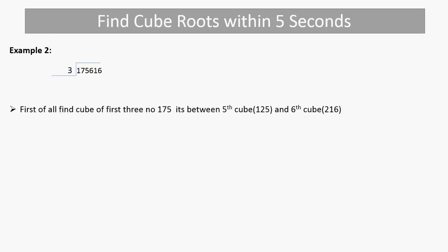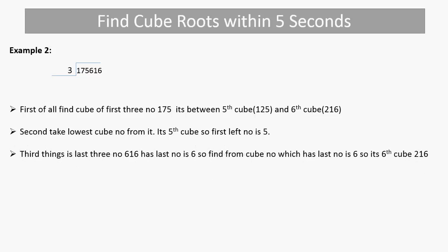Let's see another example: at 175616, find the cube root. First of all find the first 3 numbers: 175. Find which cube numbers it falls between — 5 cubed is 125 and 6 cubed is 216. Take the lesser number, so 5. The first digit is 5. The last 3 digits are 616, last digit is 6. Which cube number has last digit 6? Only 6. So combining: 5 and 6 gives 56. Our answer is 56.